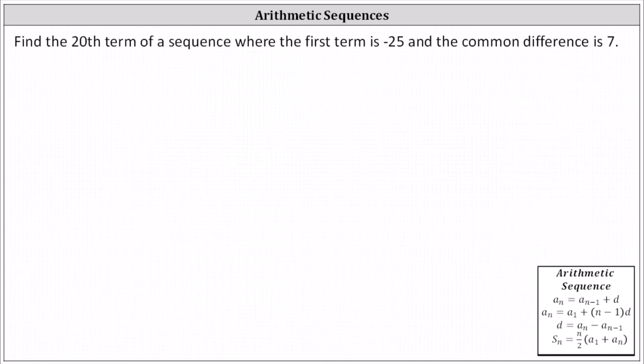Find the 20th term of a sequence where the first term is negative 25 and the common difference is 7. Because we have a common difference, we have an arithmetic sequence.